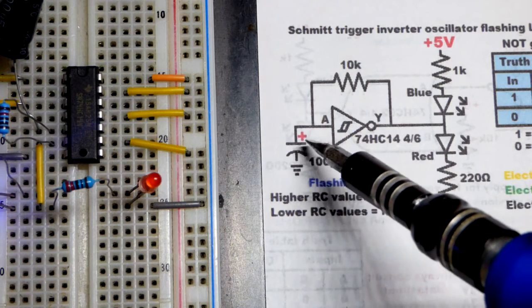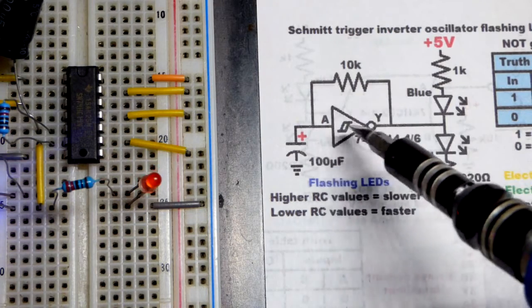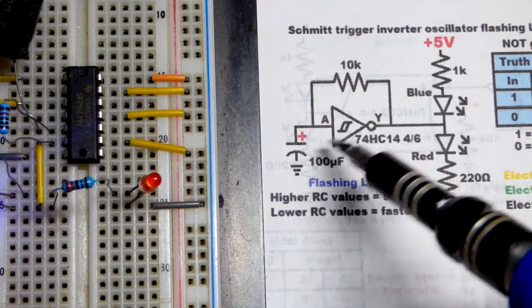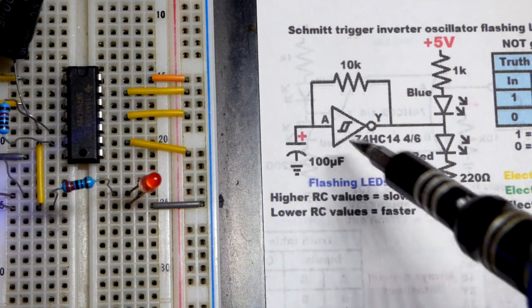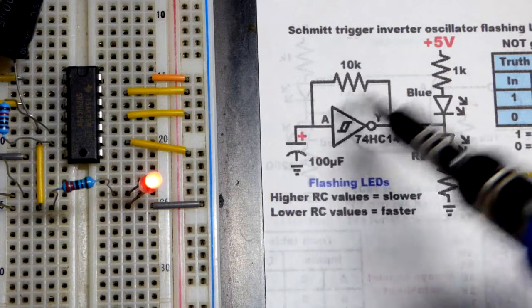At which point the output goes high. So with the inverter here, with this Schmitt trigger setting that high and low threshold voltages, we got that oscillation. It just keeps going back and forth as long as you got power applied.